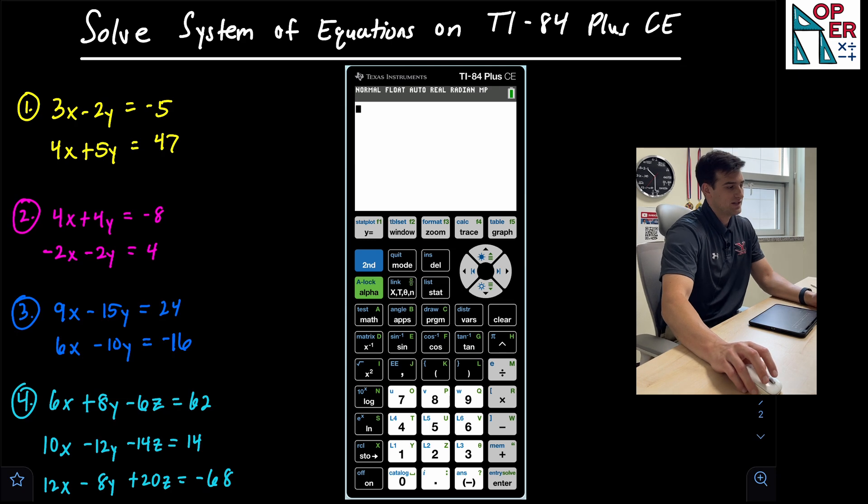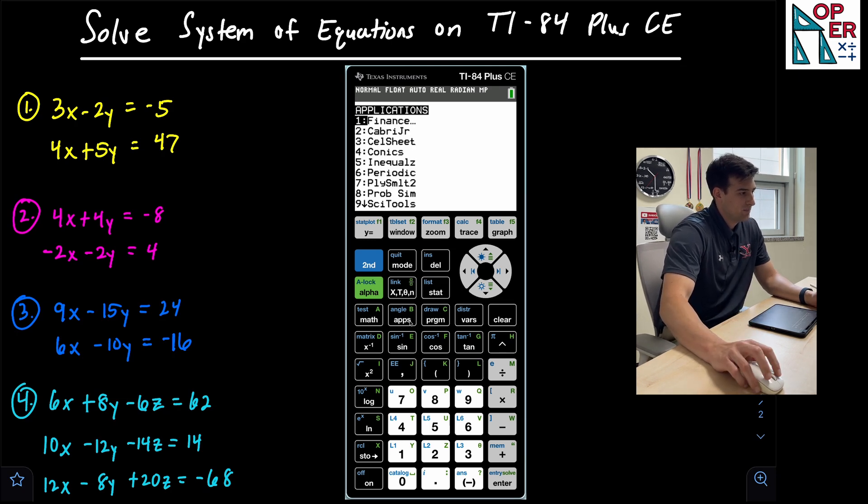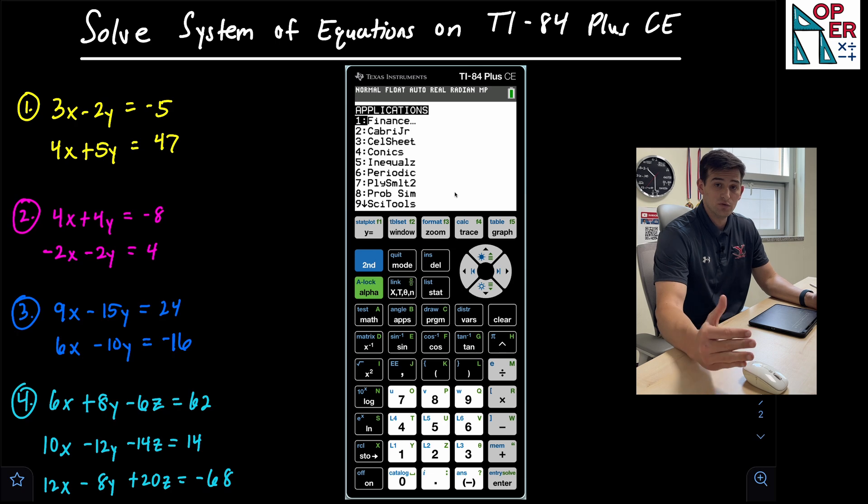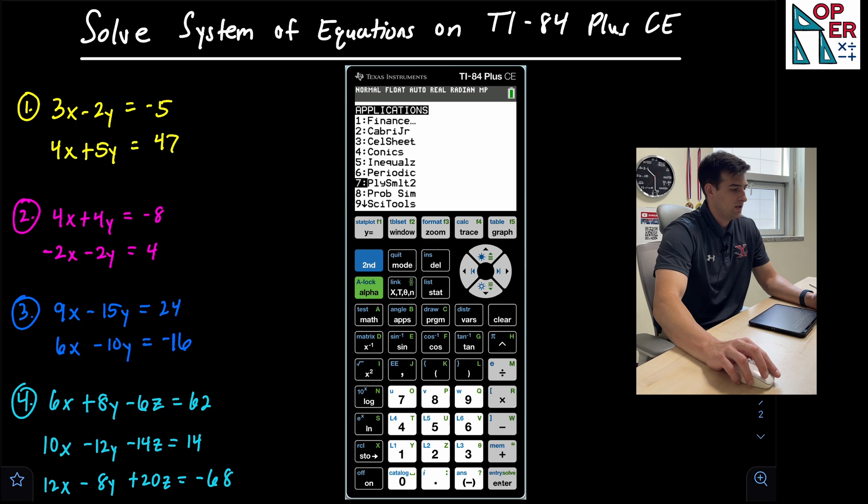So how do we get into this application? We're going to click on apps on our calculator and notice option number seven. It's P-L-Y-S-M-L-T-2. The P-L-Y stands for polynomial root finder, which we did in a separate video. If you want to check that out, I'll link it in the cards right now. But the S-M-L-T stands for simultaneous equation solver. So we want to go down here to number seven and we're going to hit enter.